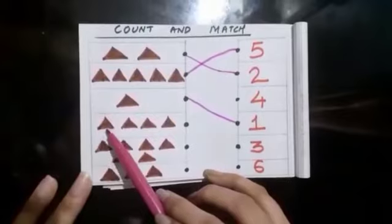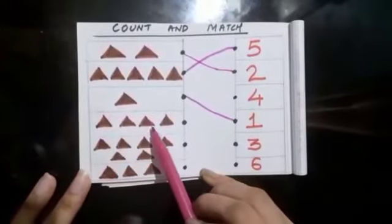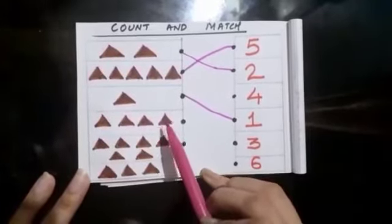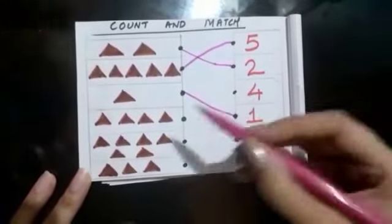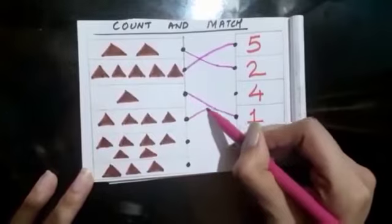1, 2, 3, 4. Where is 4? 4 is there. Let's match.